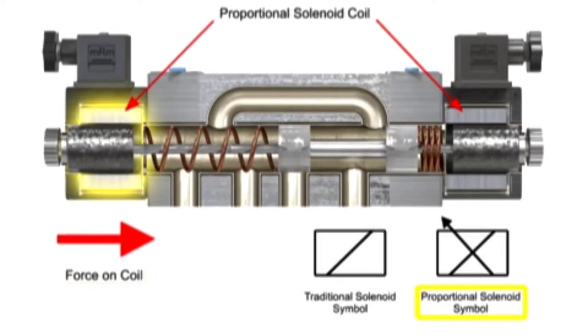The graphic symbol for this type of solenoid is a slash in the operator box with a sloping arrow through the slash.